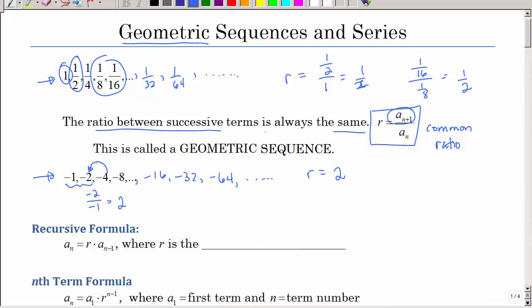Just like in arithmetic sequences, we had a recursive formula. We have that one here as well, meaning that you have to have the previous term in order to get to the next term, where r is called that common ratio.